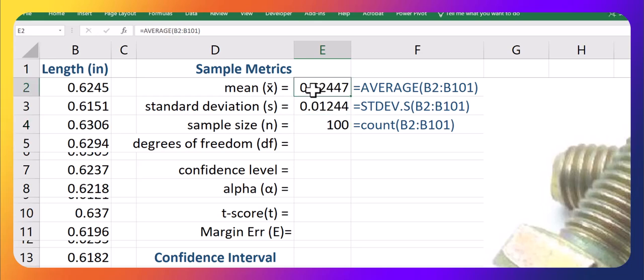A little note, these screws are supposed to be 5/8 in length, so we're not too far off. 5/8 inches is 0.625.